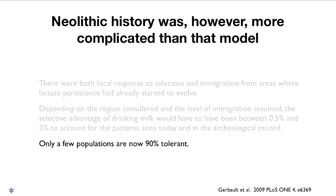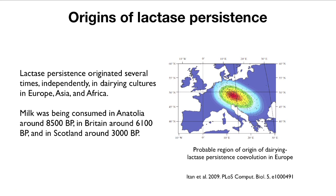Only a few populations in the world are now made up of people 90 percent of whom are tolerant to milk as adults; others are drinking soy milk or not drinking such products at all. Here is a reconstruction of the geographical distribution of the emergence of lactase persistence in Europe and Asia. Lactase persistence originated several times independently in dairying cultures in Europe, Asia, and Africa. Milk was being consumed in Anatolia about 8,500 years before present, about 6,000 years ago in Britain, and about 3,000 years ago in Scotland. That genetic capacity apparently originated in a region around Hungary, Poland, and Bielorussia, and then spread out from there.